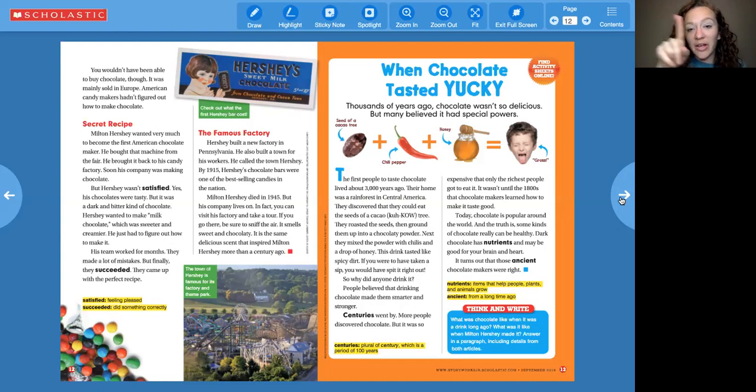Let's look at this next article covered in orange, bordered orange. That's entitled when chocolate tasted yucky. The subtitle says thousands of years ago, chocolate wasn't so delicious, but many believed it had special powers. I think chocolate has special powers sometimes. The seed of a cacao tree, plus chili pepper, plus honey equals gross. The first people to taste chocolate lived about 3000 years ago. Their home was a rainforest in Central America. They discovered that they could eat the seeds of a cacao tree. They roasted the seeds, then ground them up in a chocolatey powder. Next, they mixed the powder with chilies and a drop of honey. This drink tasted like spicy dirt. If you were to have taken a sip, you would have spit it right out. So why did anyone drink it? People believe that drinking chocolate made them smarter and stronger. Centuries went by.